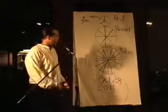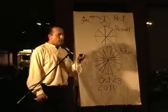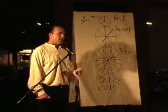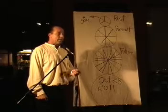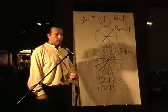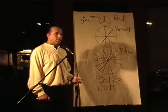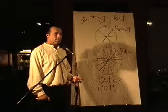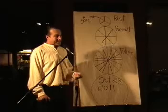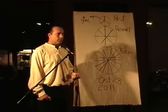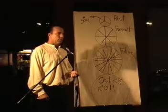October 28th is the end of the Mayan calendar because all considerations of limitation on the part of time and space will be gone. So there's no more need for a calendar to keep track of the motion, and your consciousness will not be fixed on physical. It will be infinitely free to creation.